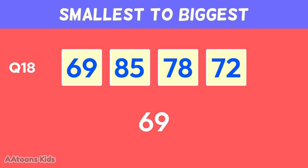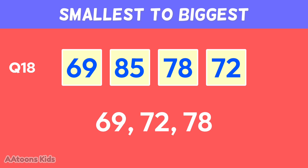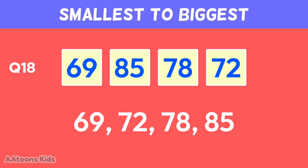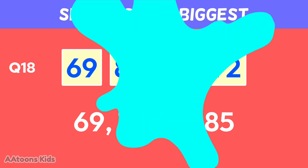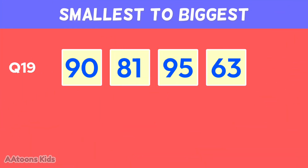Arrange these numbers from smallest to biggest: sixty-nine, seventy-two, seventy-eight, eighty-five.